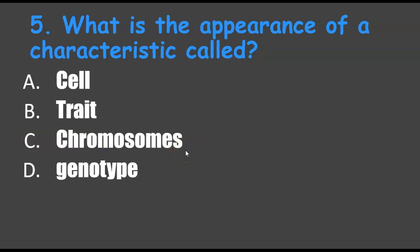Number five: what is the appearance of a characteristic called — a cell, a trait, a chromosome, or a genotype? These are the physical traits you can see. This is the phenotype.